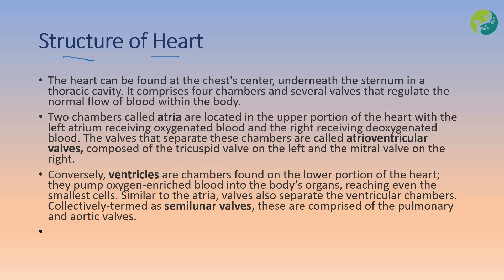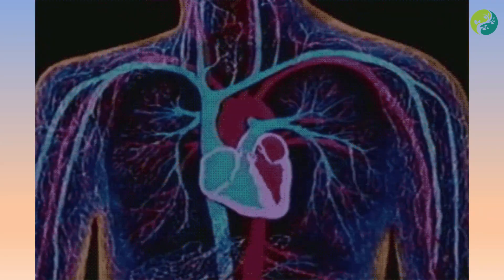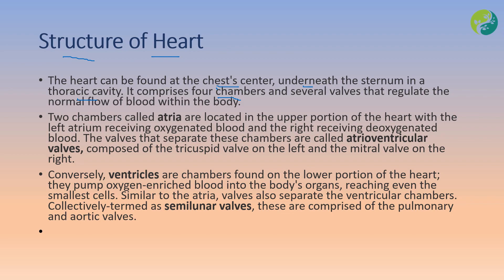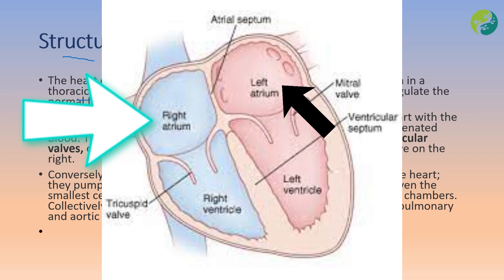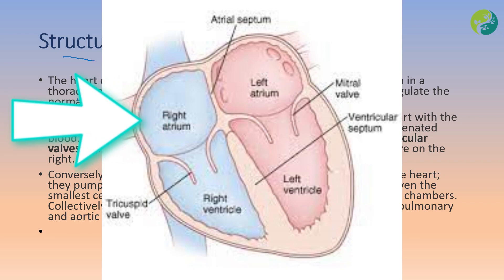The heart can be found at the chest center underneath the sternum in the thoracic cavity. It comprises four chambers and several valves that regulate the normal flow of blood. Two chambers called atria are located in the upper portion of the heart, with the left atrium receiving oxygenated blood and the right atrium receiving deoxygenated blood.